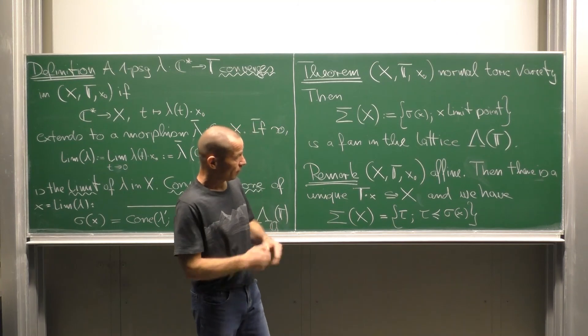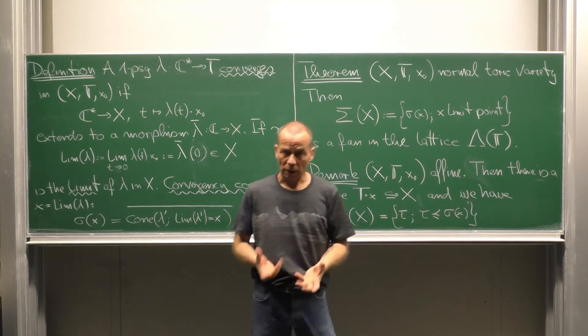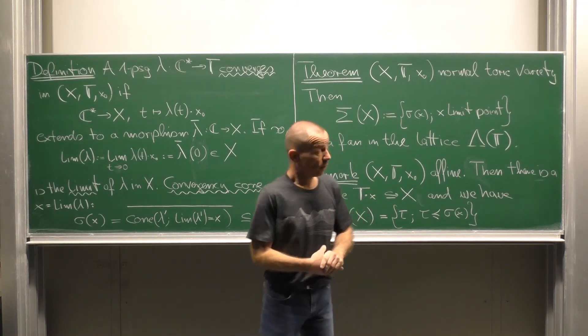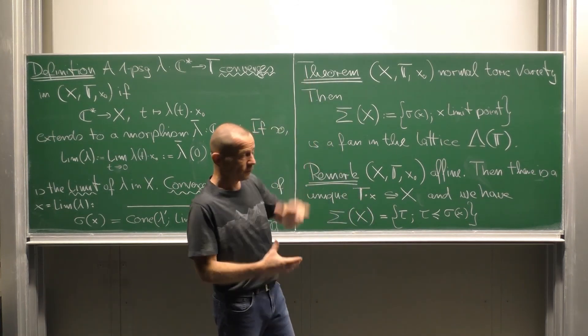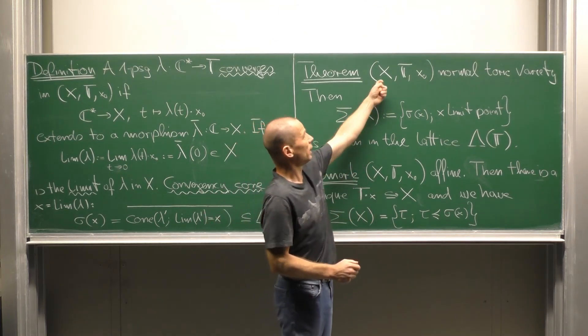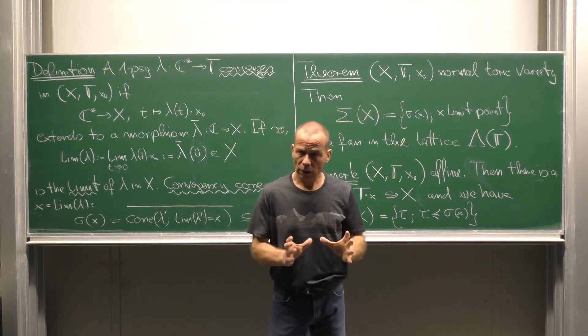Also, I did assume nothing about normality here. In fact, this is true without normality. The crucial point in the proof of this theorem is to cover our x by invariant, open, affine subvarieties.